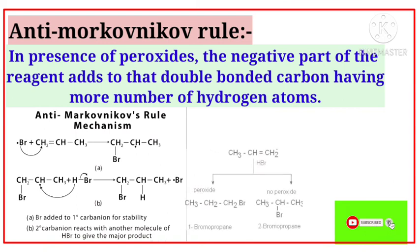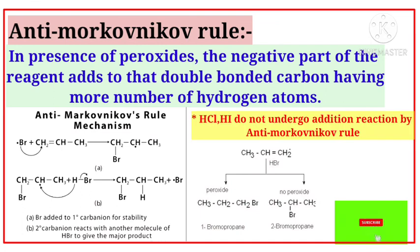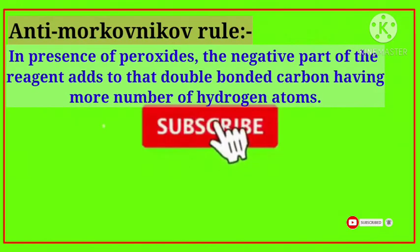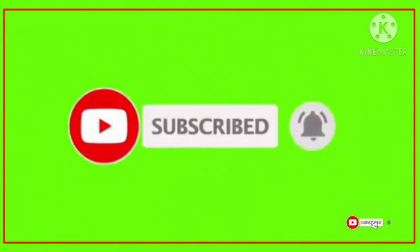Important note: HCl and HI — hydrogen chloride and hydrogen iodide — do not undergo addition reaction by anti-Markovnikov rule. Only HBr follows anti-Markovnikov addition in the presence of peroxides. These are Markovnikov rule and anti-Markovnikov rule. Please subscribe, share, and like my video.